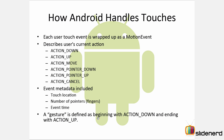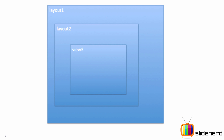A gesture is defined as beginning with action_DOWN and ending with action_UP. Whether you fling, swipe, or drag the screen - you put your finger on the screen and then lift it up - that is why action_DOWN to action_UP is considered to be a single gesture.